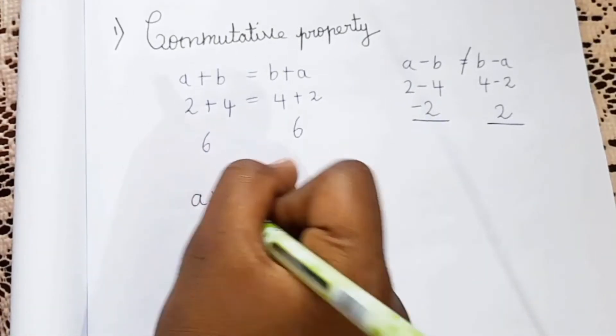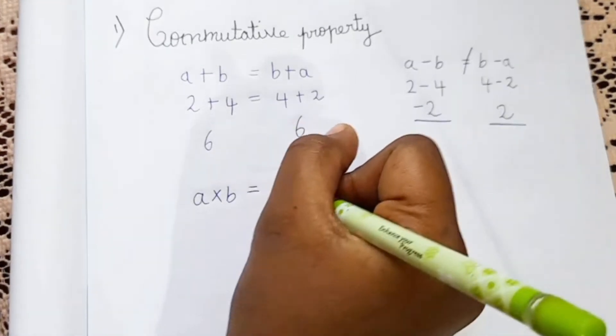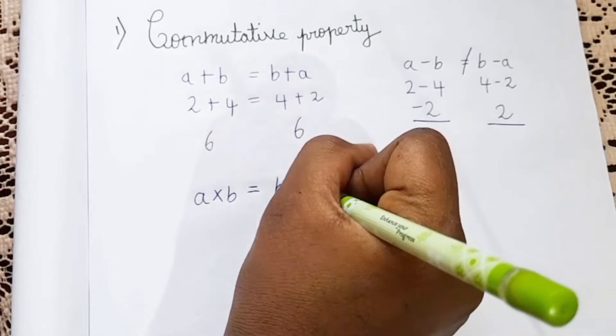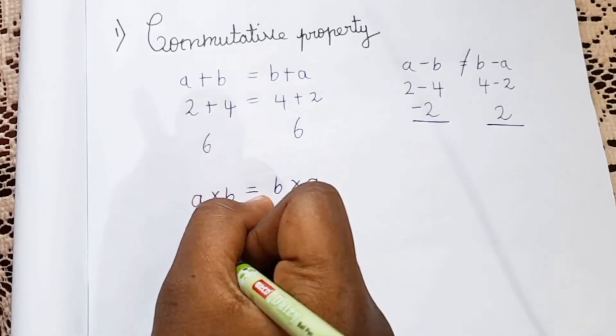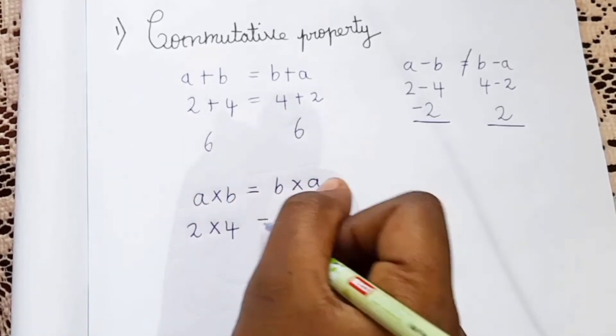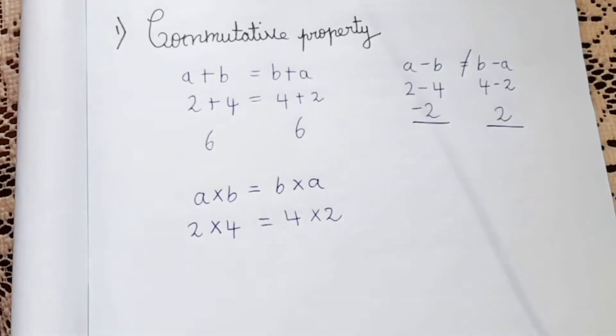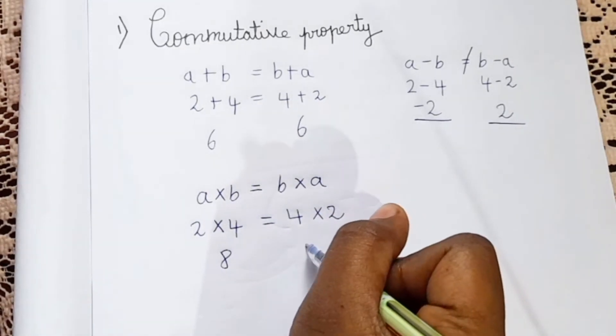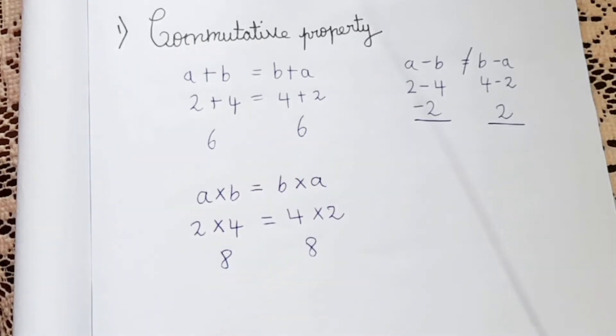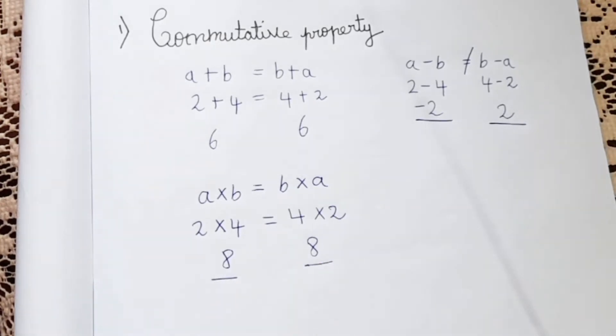So now let's check in multiplication. So a into b, if we get a into b we should write it as b into a. A into b is equal to b into a. So here also I'm taking the same number, 2 into 4 is equal to 4 into 2. So 2 into 4 is 8 and 4 into 2 is also 8. So here we got both the answer similar which means commutative property is there in multiplication.